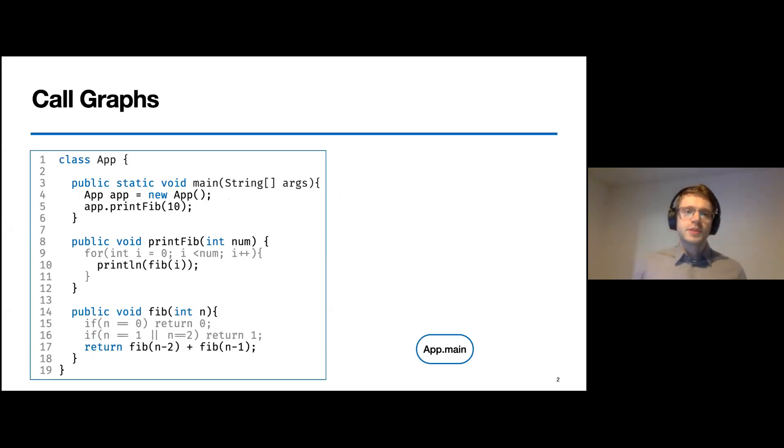A call graph itself is a foundational static analysis data structure that captures possible execution time relationships between different methods. Methods are represented as nodes in a graph, and an edge represents a call from one method to another.